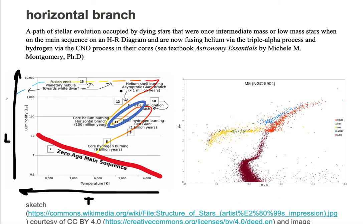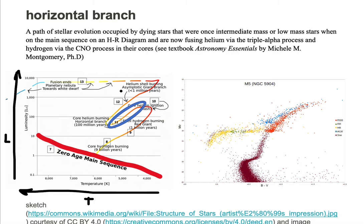We're looking at a path of stellar evolution which is circled in blue. This path is now occupied by dying stars that were once intermediate or low mass stars when on the main sequence.